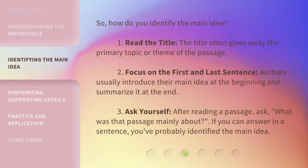So, how do you identify the main idea? First, read the title — it often gives away the primary topic or theme of the passage. Second, focus on the first and last sentence, as authors usually introduce their main idea at the beginning and summarize it at the end. Third, ask yourself after reading a passage: what was that passage mainly about? If you can answer in a sentence, you've probably identified the main idea.